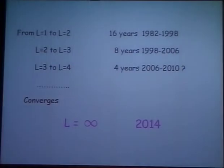So that's ending my talk. This is a prediction based on past experience: assuming that the four-loop calculation will be done in the year 2010, there's a series that converges to all of this by the year 2014. Thank you.